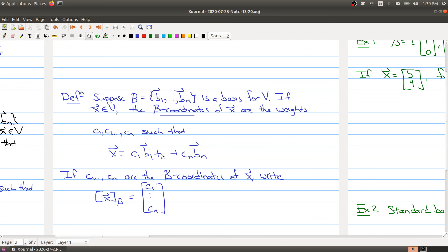And we want to go a little bit further here, kind of expand on this. If you know that c1 through cn are the B coordinates of x, then we'll write x with a subscript B here, and we're going to make a vector c1 through cn to store all this information. And so this is called the B coordinate component of x.